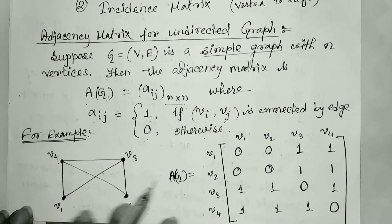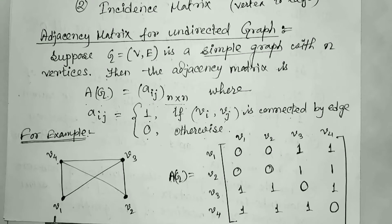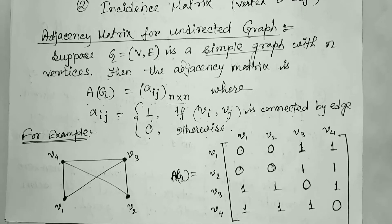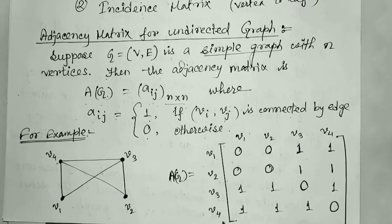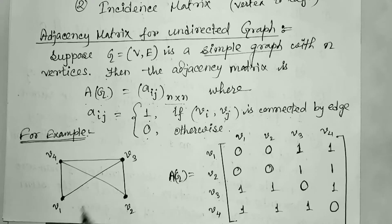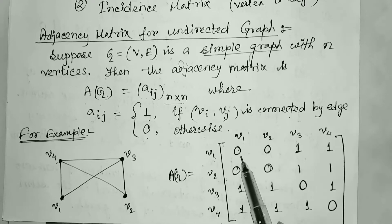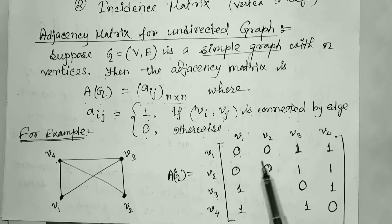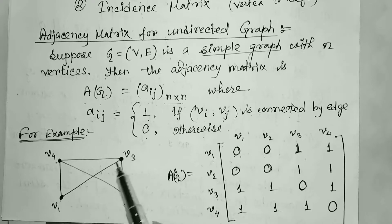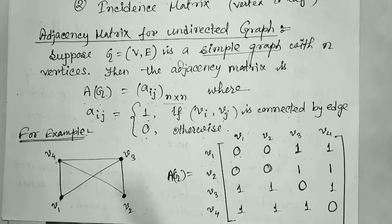For example, let this be a graph with four vertices: V1, V2, V3, and V4. Its adjacency matrix A(G) is drawn with V1, V2, V3, V4 both row-wise and column-wise. V1 to V1: no connection, so 0. V1 to V2: no connection, so 0. V1 to V3: there is an edge, so 1. V1 to V4: there is one edge connectivity, so also 1.